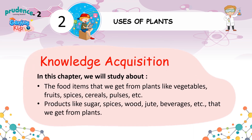In this chapter, we will study about the food items that we get from plants, like vegetables, fruits, spices, cereals, pulses, etc. Products like sugar, spices, wood, jute, beverages, etc., that we get from plants.